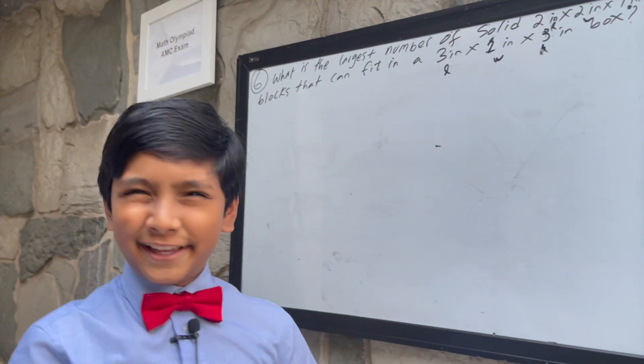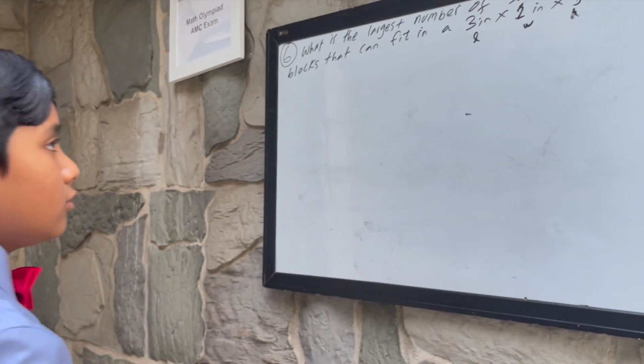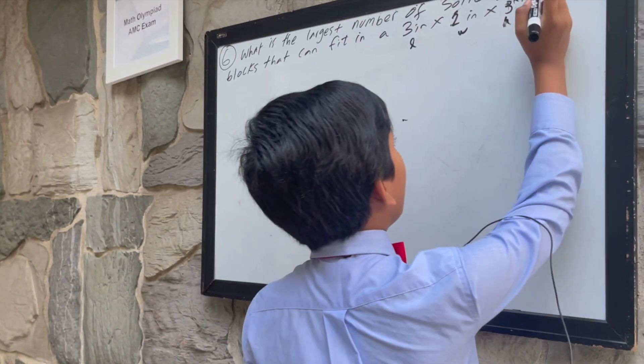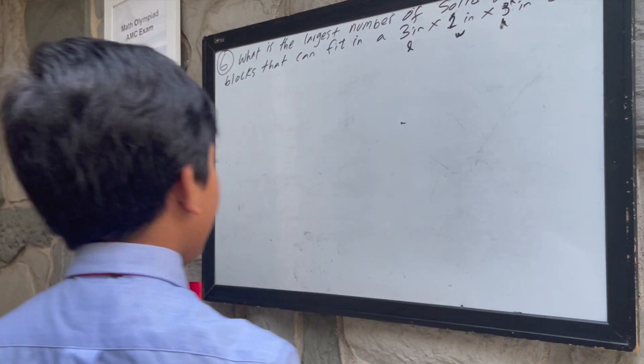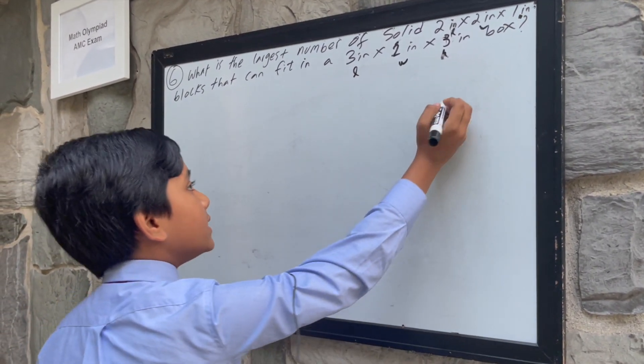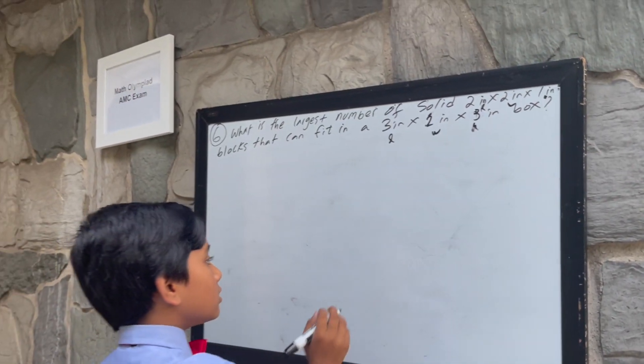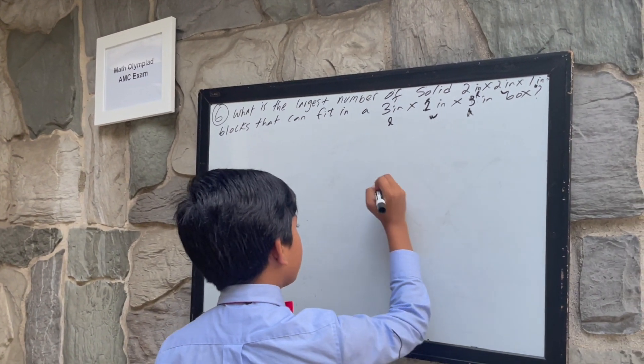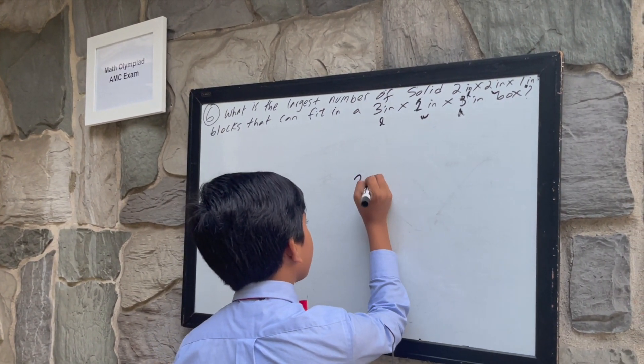How are we going to do this? Well, realize that although the width fits perfectly in, this height is 1 inch, while this height is 3 inches. So that means that you will be able to fit 3 perfectly in there.